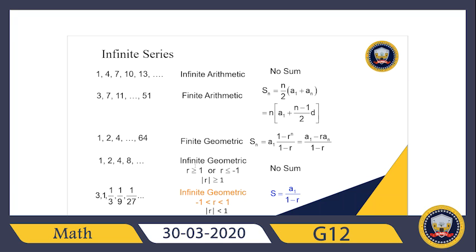If the absolute value of r is less than one, we say we do have a sum. For infinite geometric sequences, if |r| < 1, we can use the formula for the summation of the series, which is a₁ (the first term) divided by (1 minus r).